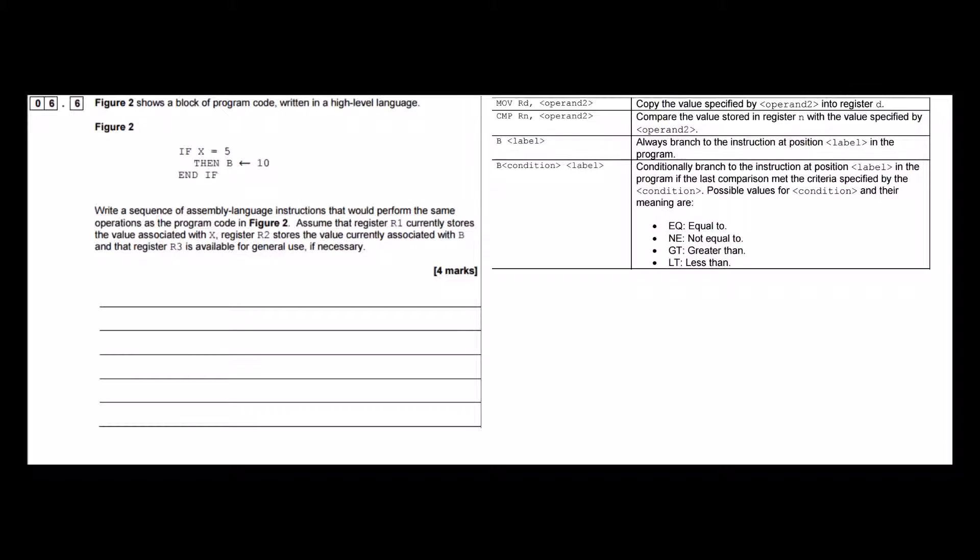And for that we need this instruction here. So to compare x with the decimal value 5, we need to know where x is stored, and in the question it tells us that x is stored in register 1.